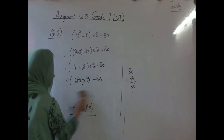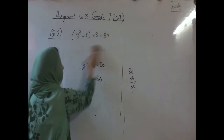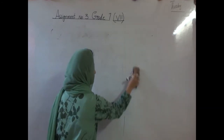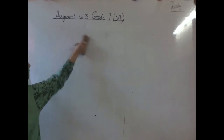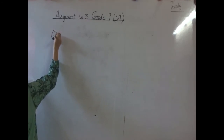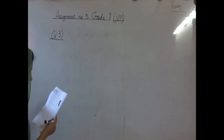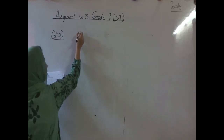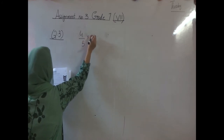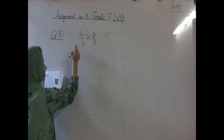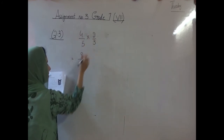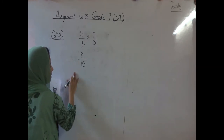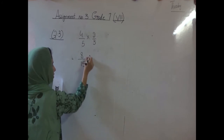Question number 3: calculate and give the answer in the lowest term. First we will calculate and then convert into the lowest term. The 4th part is 4 by 5 multiply 2 by 3. First multiply: 4 multiply 2 equals 8, and 5 multiply 3 equals 15. Can we convert this into the lowest form? Can we divide with the same table? No. So 8 by 15 is the answer.